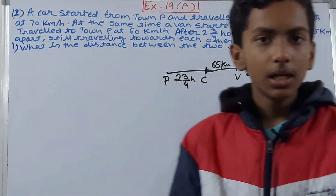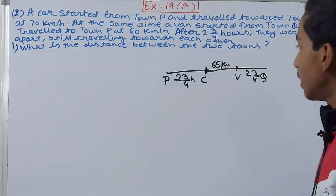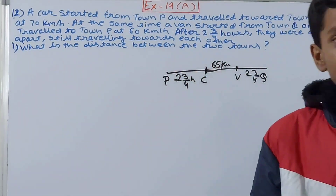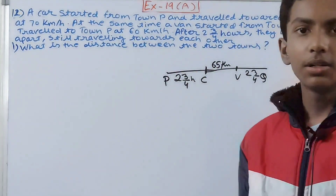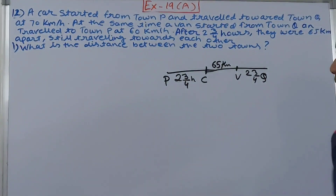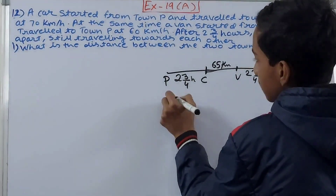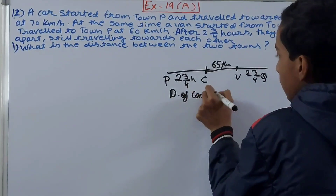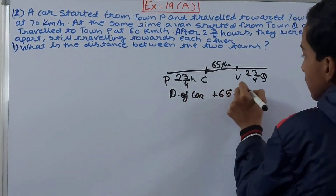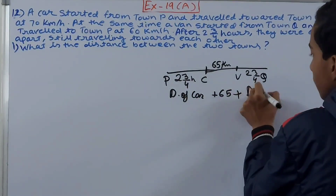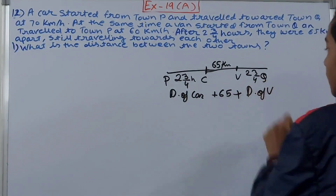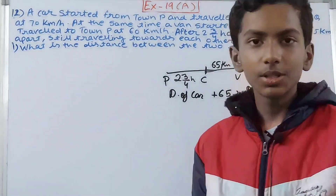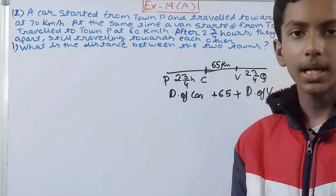It's quite simple. First, we calculate the distance the car has traveled, then the distance the van has traveled, and then we add 65 kilometers. So: distance of car + 65 + distance of van = total distance between towns P and Q.